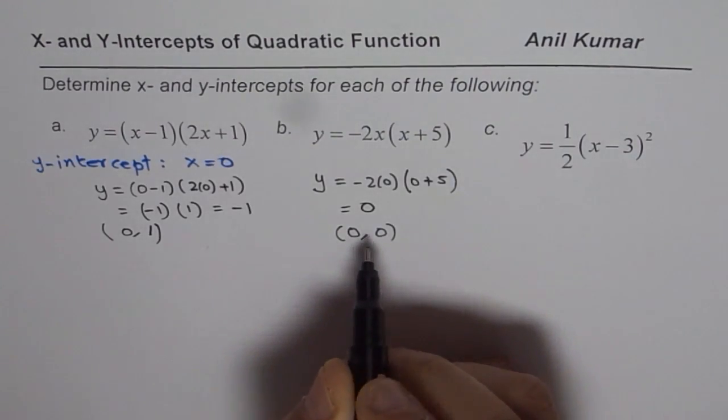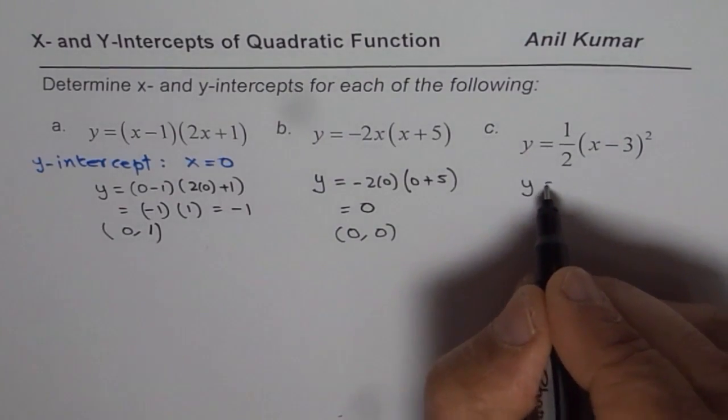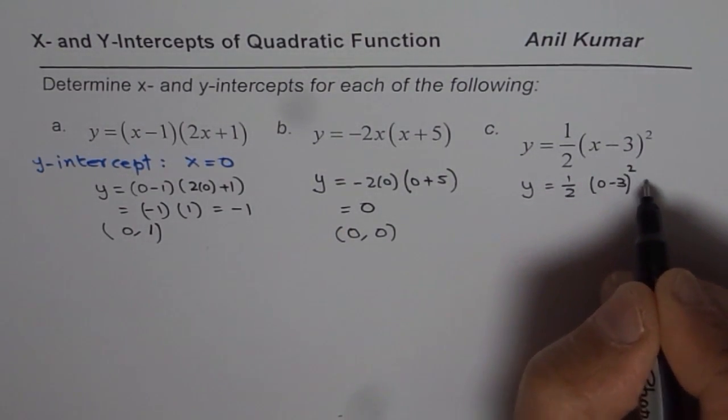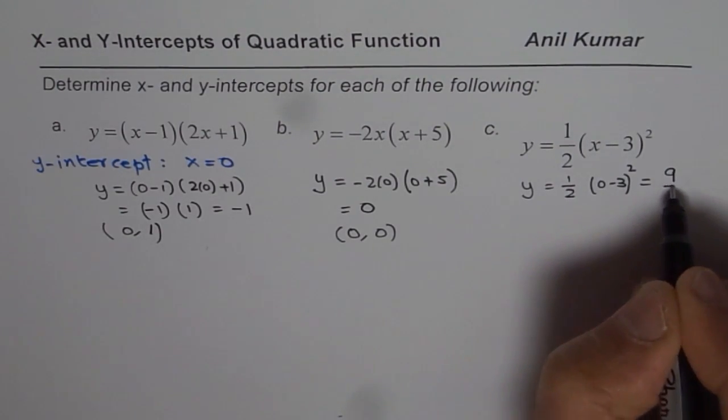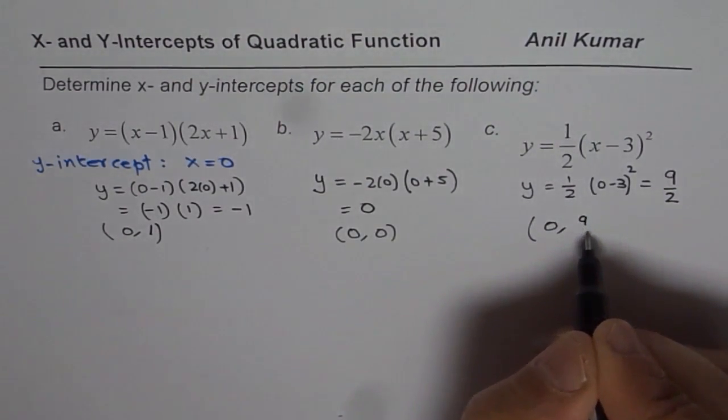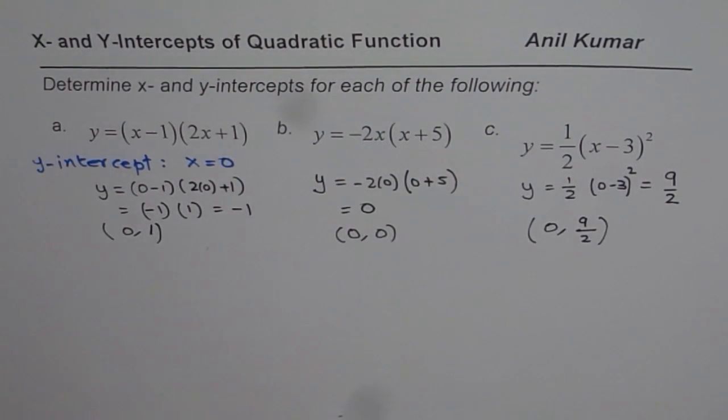So origin is the y-intercept for this particular equation. Here, y-intercept will be half times 0 minus 3 whole square, which gives us 9 over 2. And therefore, the y-intercept will be 0 is the x-coordinate value, 9 over 2 or 4.5 you can write as a y-intercept.